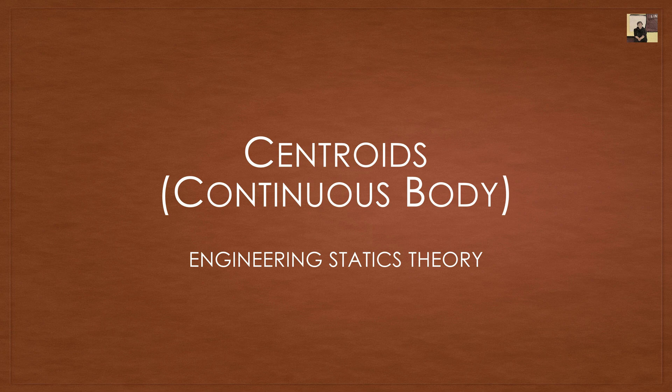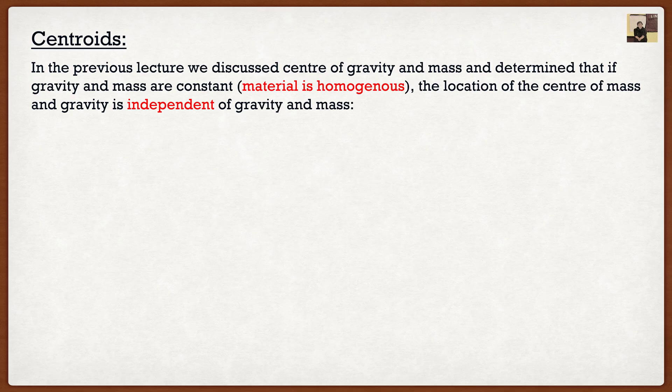Hello everyone and welcome back to another Engineering Statics lecture video. In the previous lecture we discussed center of gravity and mass, and we determined that if gravity and mass are constant — which basically means our material is homogeneous — the location of the center of mass and gravity is actually independent of gravity and mass.